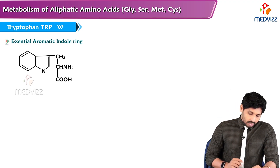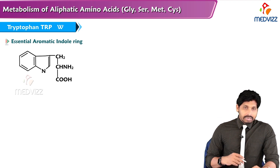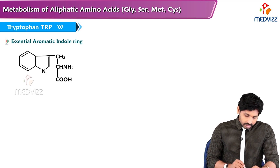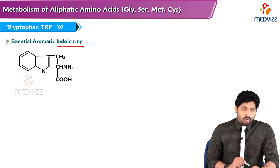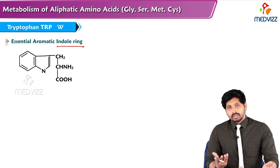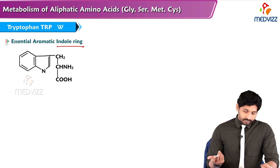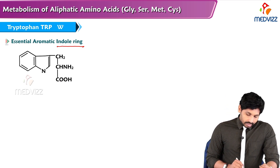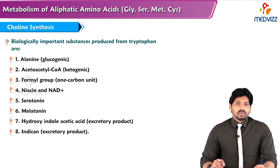So tryptophan is essential. Its functional group is the indole ring — unlike phenylalanine and tyrosine which have benzene and phenol groups, tryptophan has an extra five-membered indole ring attached to a benzene ring.